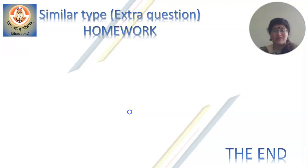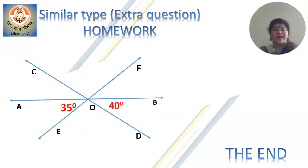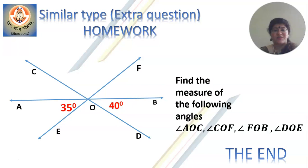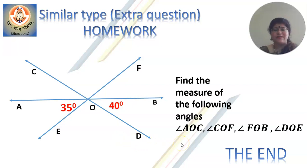Write down this question in your notebook and do this one homework question. Draw the diagram — this question is not in the textbook, it is an extra question. Find the measure of the following angles: angle AOC, COF, angle FOB, and angle DOE. I don't want direct answers — you have to show the working. With this, we end today's session. I have done one theorem and the first question of exercise 6.1. Write down the theorem and the question in your notebook and solve this homework. Goodbye and take care.